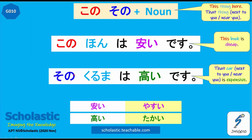So if you don't use sono, if you use sore, then sore wa takai desu — you can use sore without a noun. That is what we did in the sore and kore case. So after kono you add a noun: kono hon. After sono you add a noun: sono kuruma. Yasui is cheap, takai is expensive.